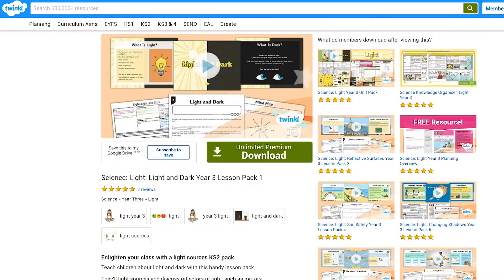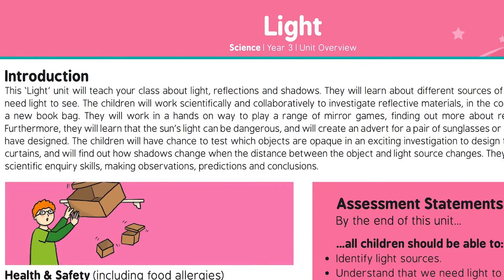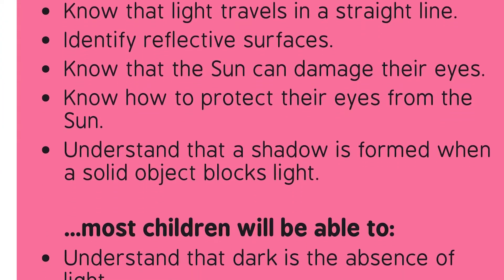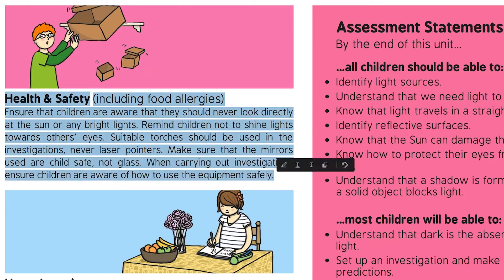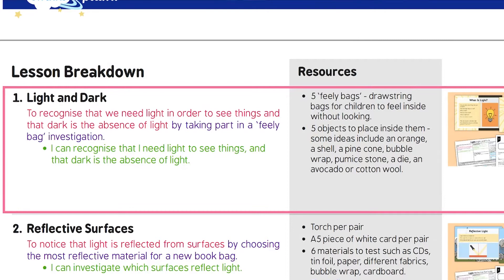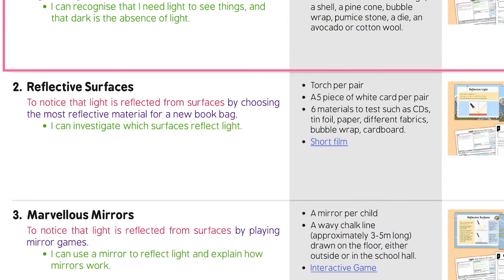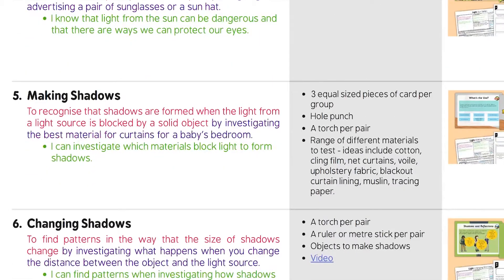Using this lesson on light and dark from the topic of light as today's example, I suggest starting with the unit overview. This overview gives you a preview of what your child will learn, what your child should know by the end of the unit, and some extra useful info like health and safety and opportunities for wider learning beyond this topic. It then highlights which lesson in the sequence you're on — extremely useful for seeing at a glance what direction your child's learning will be taken in over the course of the six lessons.